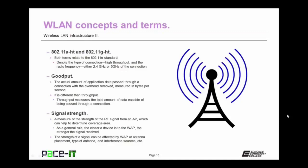Then there's goodput. Goodput is the actual amount of application data passed through a connection with the overhead removed. It's measured in bytes per second. It is different than throughput — throughput measures the total amount of data capable of being passed through a connection, so it includes network overhead.